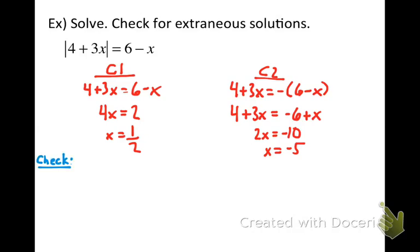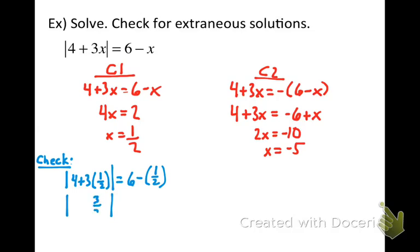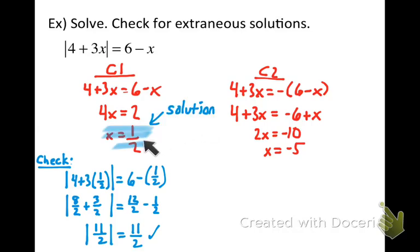Let's check our solutions. Plugging x equals 1 half into the original equation: the absolute value of 4 plus 3 times 1 half equals 6 minus 1 half. That's the absolute value of 4 plus 3 halves — rewriting 4 as 8 halves gives the absolute value of 11 halves. On the right, 6 as 12 halves minus 1 half gives 11 halves. So the absolute value of 11 halves equals 11 halves — that's a true statement. x equals 1 half is a solution. Make sure you label it as such.